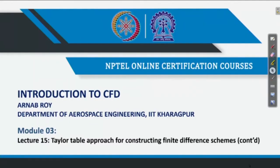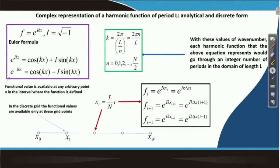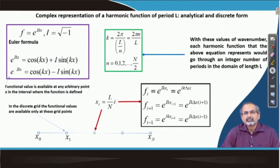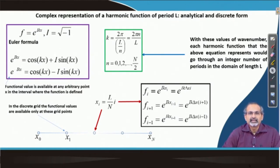In this lecture, we continue our discussion on the wave number approach. Last time, we had introduced the complex representation of a harmonic function and looked at the analytical form of its derivative, then derived the discrete form using the CD2 scheme. We showed that the wave number from the analytical derivative does not exactly match the wave number from the finite difference approximation using CD2, and we used the nomenclature k' for the so-called modified wave number.